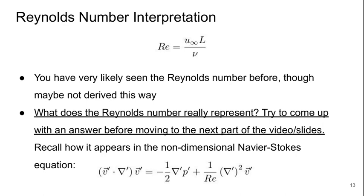Again, you've probably seen the Reynolds number before, though probably not derived this way. So what does the Reynolds number really represent? Try to come up with an answer to this question for yourself before you move on to the next part of the video. As a bit of a hint, recall how the Reynolds number appears in the non-dimensionalized Navier-Stokes. Here's the equation again: it says one over Reynolds number times this last term on the right hand side. Have a think about this and try to come up with an answer before you move on.